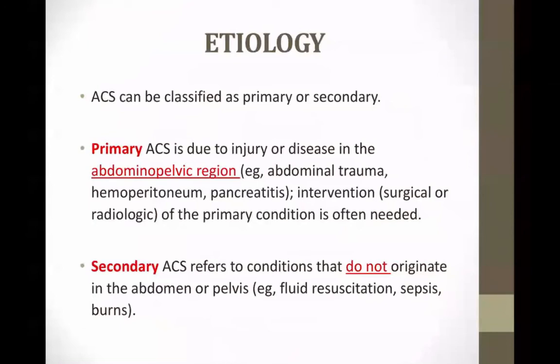The causes of abdominal compartment syndrome can be classified as primary or secondary. Primary refers to anything within the abdomen or abdominal-pelvic region — trauma to that region or even intervention could lead to ACS. Secondary causes are usually systemic, typically because of excessive fluid resuscitation or extravasation of fluid.